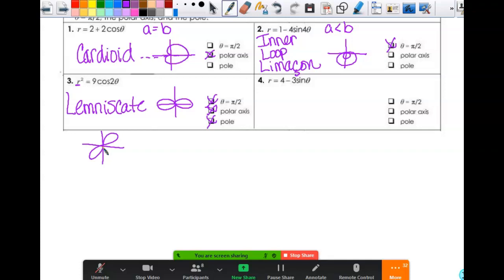All right, number four. One more limaçon. So here, A is greater than B. But A is not greater than or equal to two times B, so it's not convex. That would make this a dimpled limaçon. This is sine, and it's negative. So it's down here. It would look something like this. Not really anything like that, but good enough for us to figure out symmetry, right? And that means it would be symmetric to theta equals pi halves.